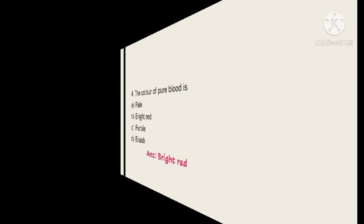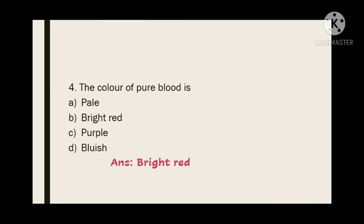Number 4. The color of pure blood is: A. Pale, B. Bright red, C. Purple, D. Bluish. Answer: Bright red.